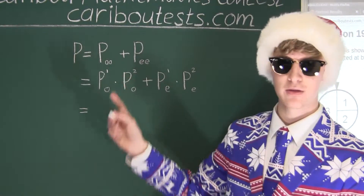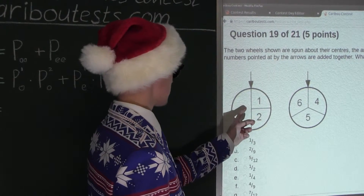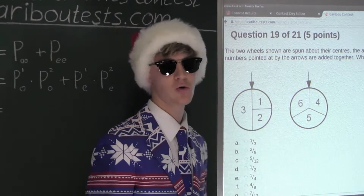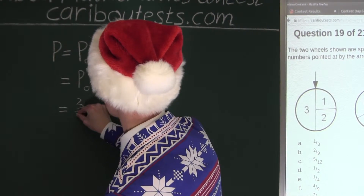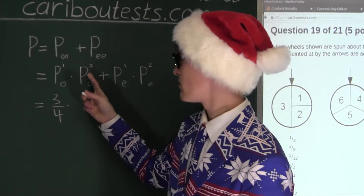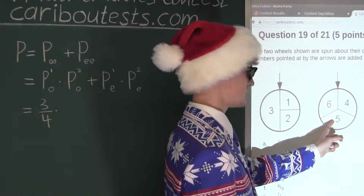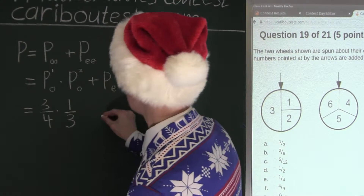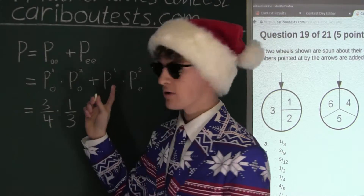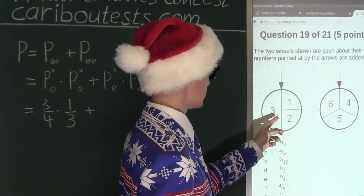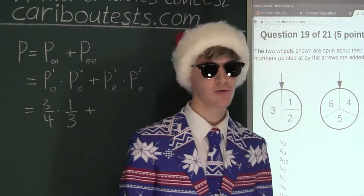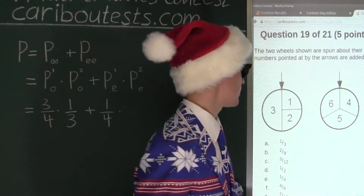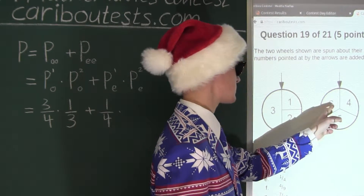Now let's look at what we have. For the probability of the first wheel spinning an odd number, the odd numbers make up three quarters of that wheel, so this equals three over four. Then multiplied by the probability of the second wheel spinning an odd number — the only odd number there is five, and that takes up a third of that wheel, so multiplied by one third. Then plus the probability of the first wheel spinning an even number, which is one over four, multiplied by the probability of the second wheel spinning an even number — that would be four or six — so two over three.